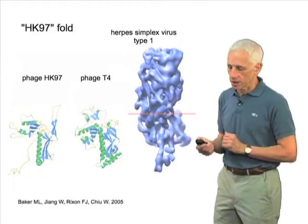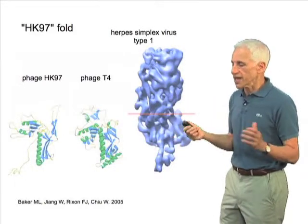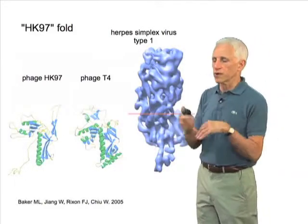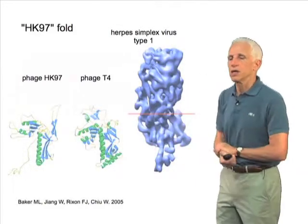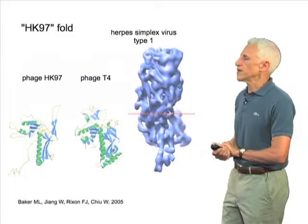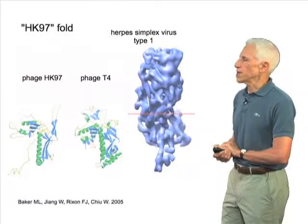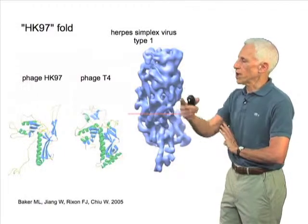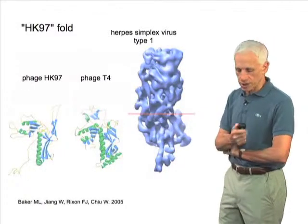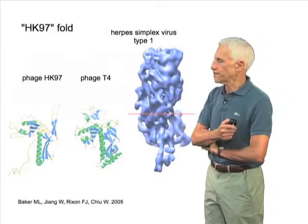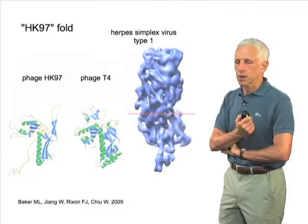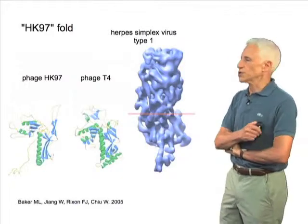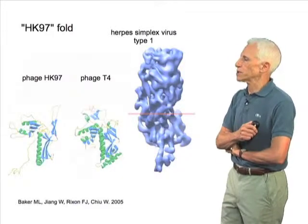The herpes virus particle is more complicated — both larger and more complicated than the phage particles — and so there are other interactions of those surface loops that are important.